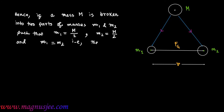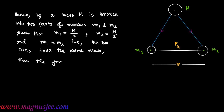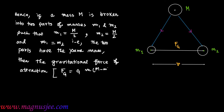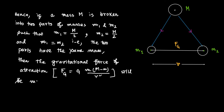Hence, if a mass capital M is broken into two parts of masses m1 and m2 such that m1 = m2 = M/2 (i.e., m1/m2 = 1), meaning the two parts have the same mass, then the gravitational force of attraction FG = G·m·(M − m)/r² will be maximum.